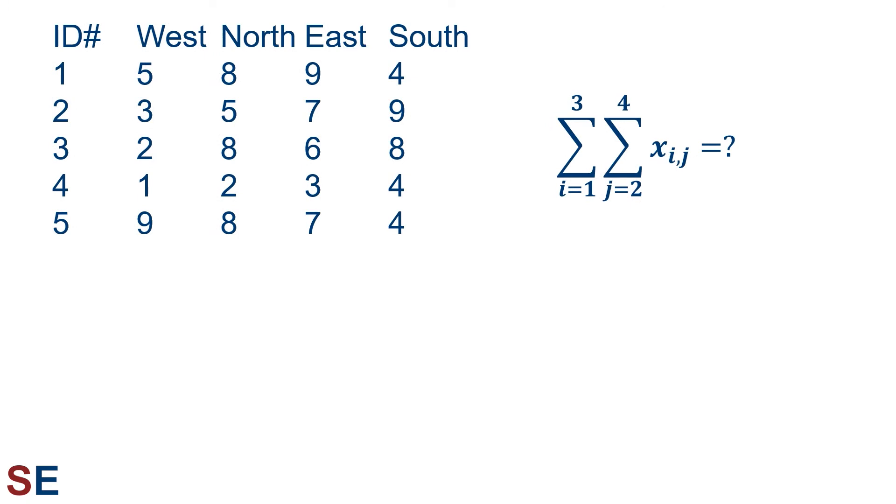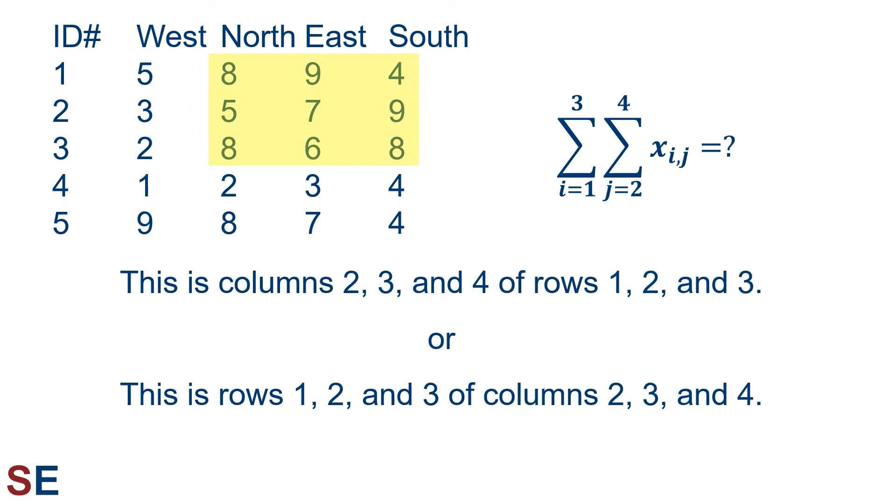Let's look at an example of this. Here we have the double summation of x, with i going from 1 to 3, and j going from 2 to 4. Let's think about what this double summation represents. We can think of this as the summation of columns 2, 3, and 4, the second summation, for rows 1, 2, and 3, the first summation. Or, we can think about this as the summation of rows 1, 2, and 3, the first summation, for columns 2, 3, and 4, the second summation. Both of these ways of thinking about it describe that yellow box indicated.